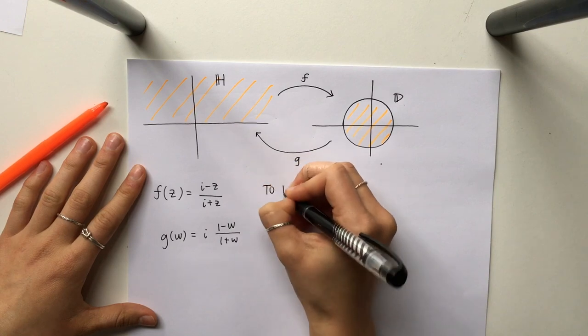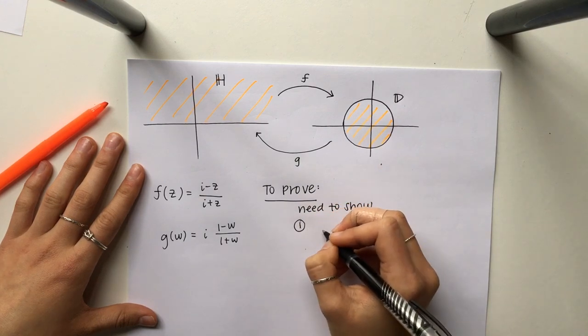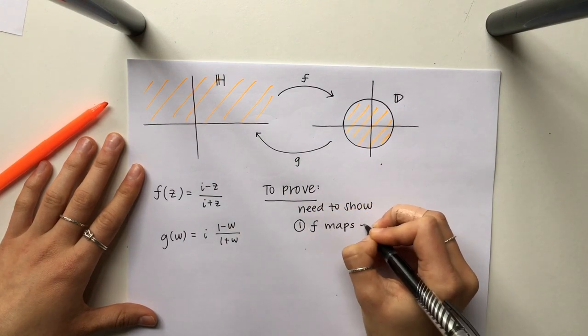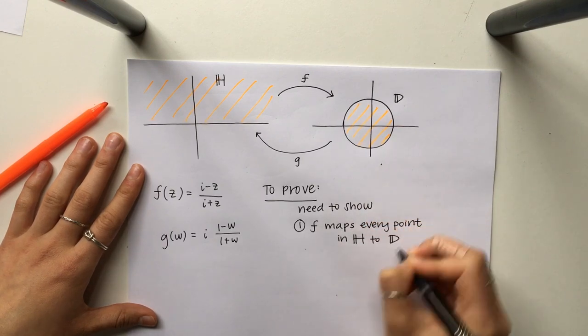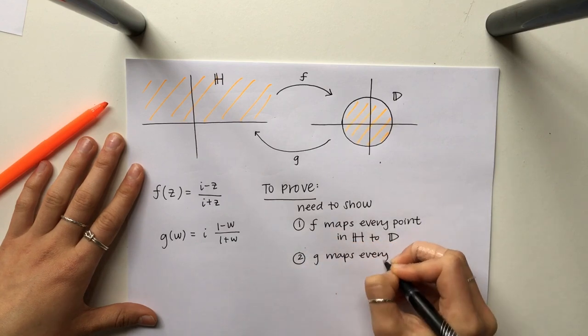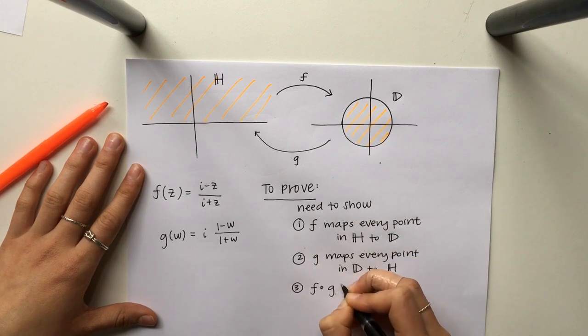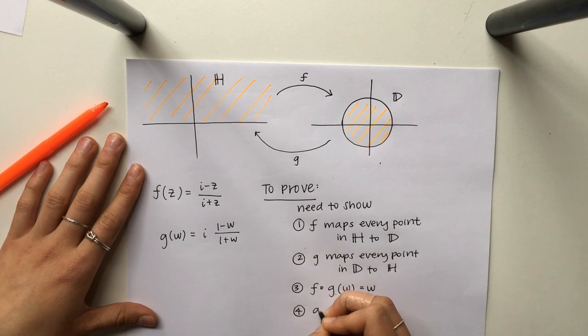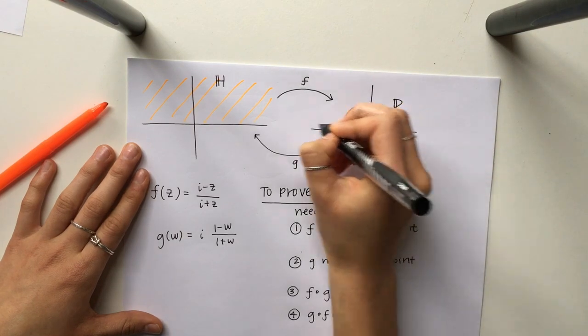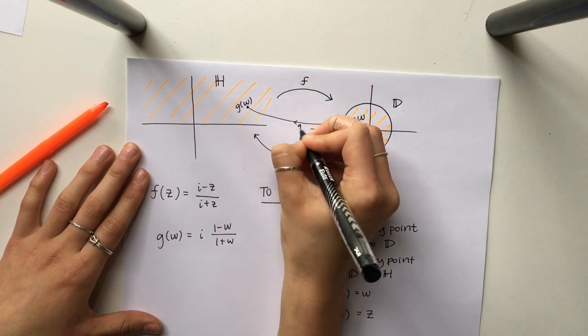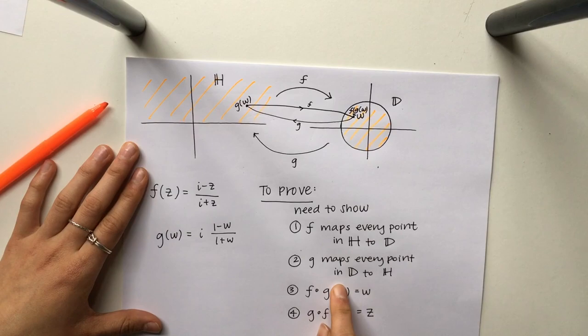So in order to prove that these maps are conformal maps we just need to show four things. The first thing is we need to show that every point in H is mapped to D by f. So f maps every point in H to D. Similarly we need to show that g maps every point in D to H. And then the other things we need to show is that the composition of f and g lead to w and the composition of g and f lead to z. So what I'm saying is if I have a point w inside of D and we map it by g to a point in H, then I can map it back to that exact same point in D.